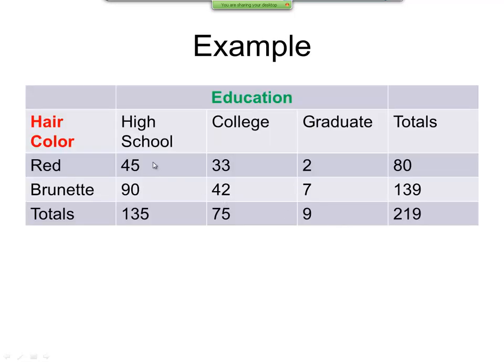So for example, we had our original table and I added the high school students together. 45 plus 90 gives us 135. The college, 33 plus 42 gives us 75. 2 plus 7 gives us 9 for the graduate. And then across the rows, we took 45 plus 33 plus 2 to give us 80. 90 plus 42 plus 7 gives us 139. Now for the grand total, you can either add together the totals in the column here, 80 plus 139 will give you 219. Or you add together 135 plus 75 plus 9 will give you the 219.